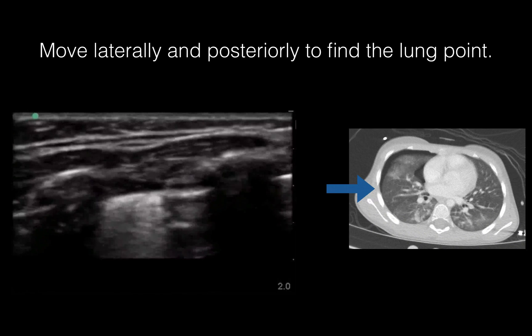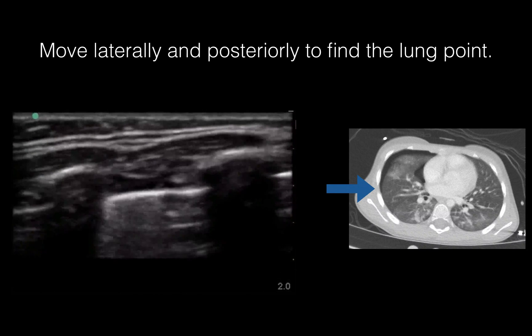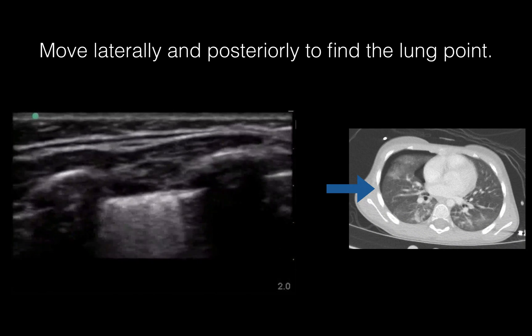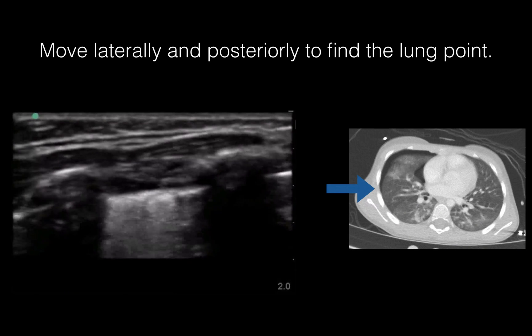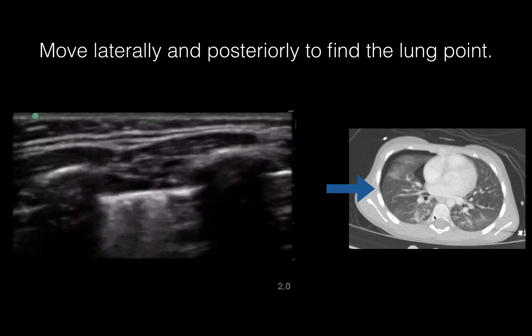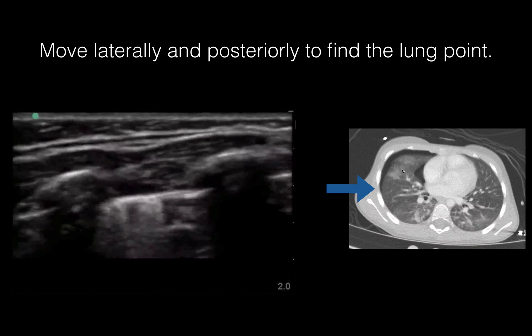This is an interesting ultrasound because you also see B lines that obliterate the A lines. That's because this little kiddo had pulmonary contusions right here.